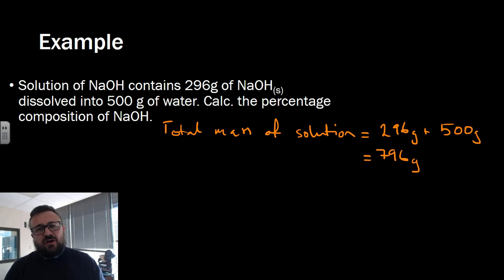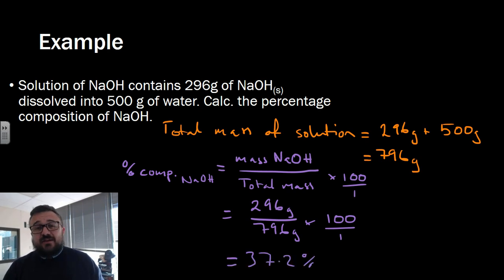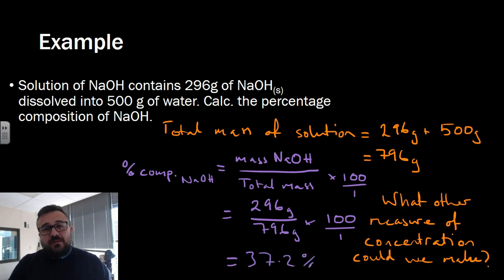Now that we've got our unknowns, let's work out our unknown. The composition by percentage composition of sodium hydroxide equals mass of sodium hydroxide over the mass of the total solution times 100. That's 296 divided by 796 times 100, and this gives us 37.2%.